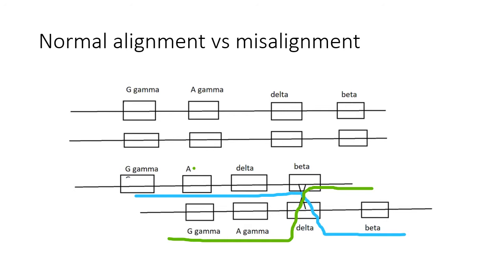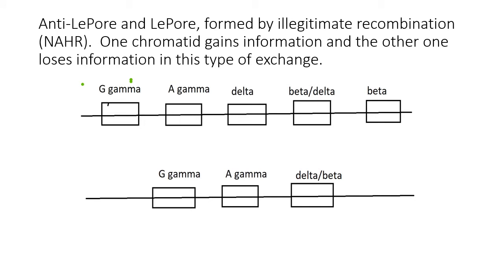The way to draw these chromatid exchanges is to start at the left, work your way along, and when you get to the X, switch to the other chromosome and continue. We make a blue chromatid and a green chromatid as a result of misalignment and unequal sister chromatid exchange. One chromosome gains information and ends up with G gamma, A gamma, delta, a beta-delta fusion, and a beta — that chromosome is fine because it has at least one good copy of each gene. The other product has G gamma, A gamma, and a delta-beta fusion, which is bad because delta is not expressed strongly, leaving it essentially without a full-fledged beta globin. That's the Lepore hemoglobin.